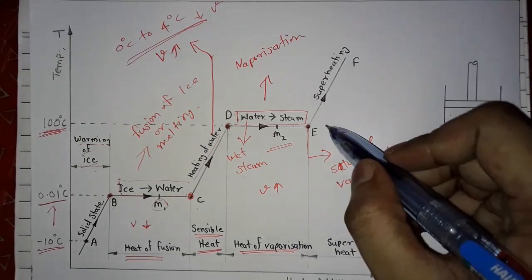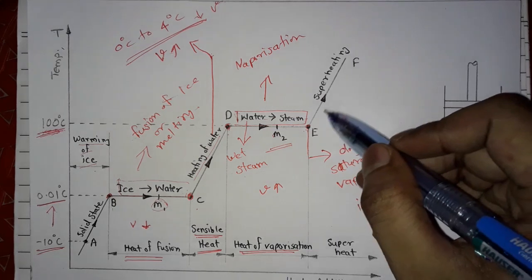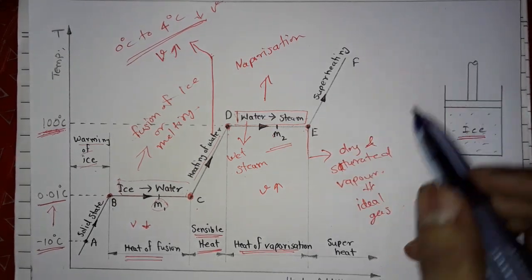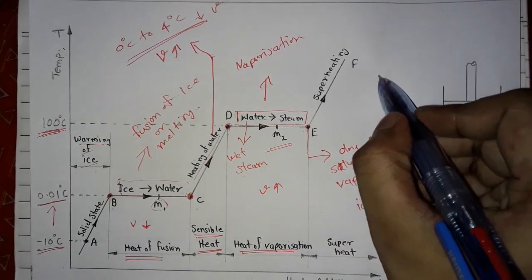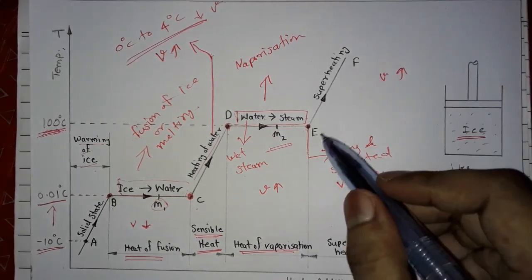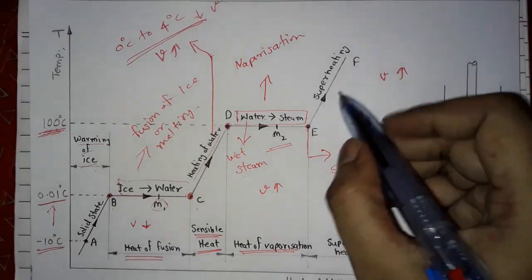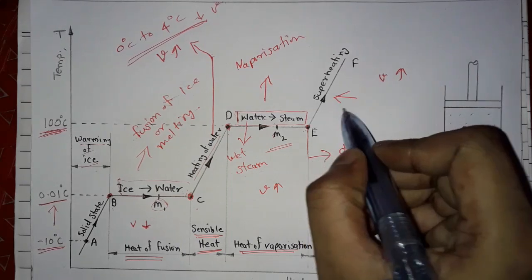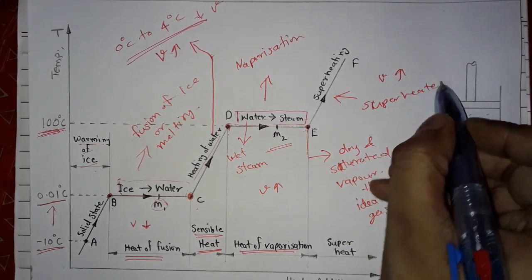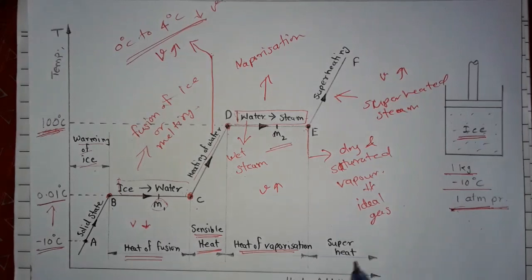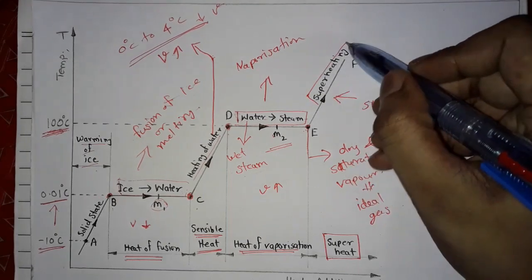In process E to F, further addition of heat increases the temperature of the vapor at constant pressure, along with an increase in the specific volume of the vapor. This steam is called superheated steam. The heat addition during this process is called superheat and the process is called superheating.